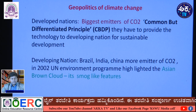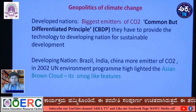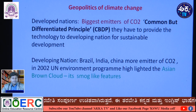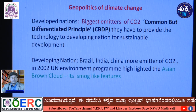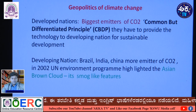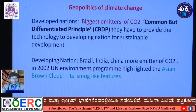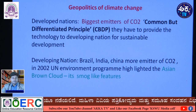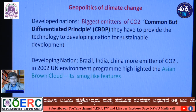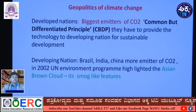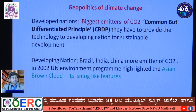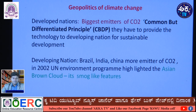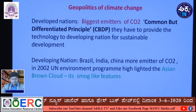Developed nations are highly emitting CO₂, but developing nations like Brazil, India, and China are also significant emitters. In 2002, the United Nations identified the Asian Brown Cloud — a smog-like feature observed over the Asian region — attributed to pollution from developing nations like China, India, Pakistan, and other countries.